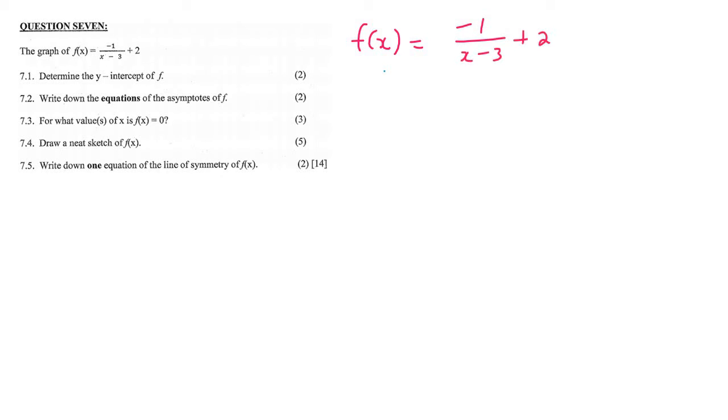Question 7.1 says determine the y-intercept. That's quite easy. To find a y-intercept, we make x equal to 0. That's going to give us -1 over 0 minus 3 plus 2, which gives us a third plus 2, and that's going to give us 2.33.